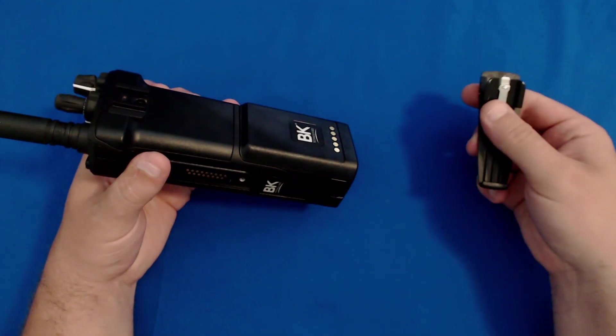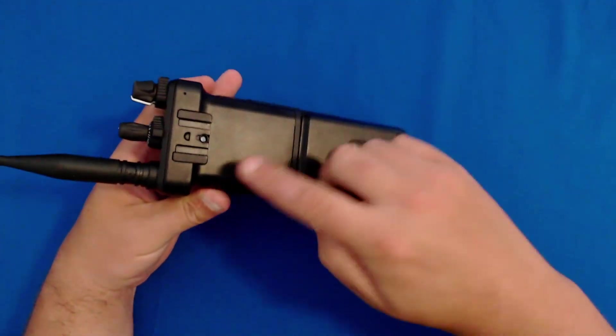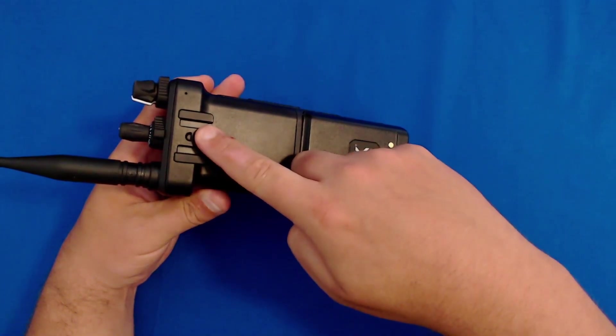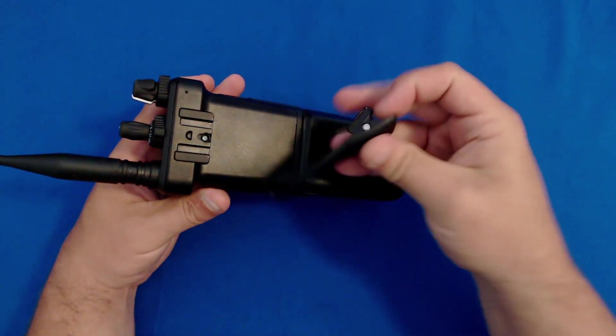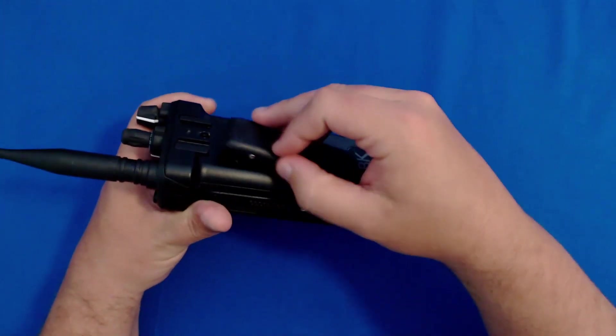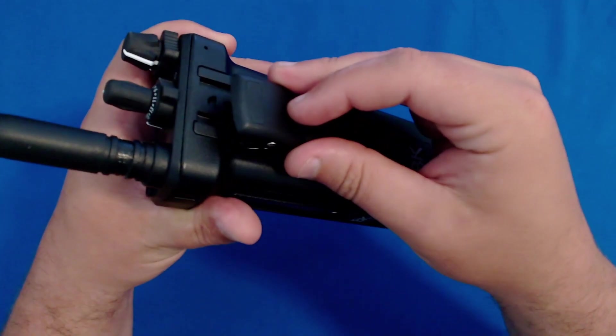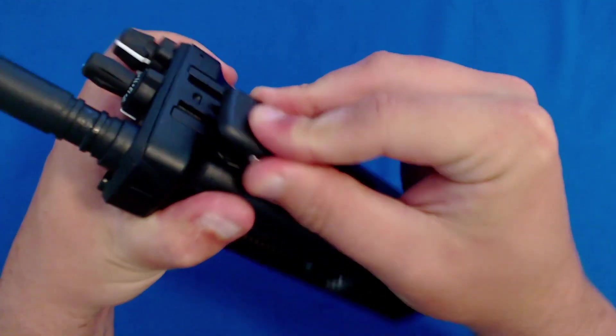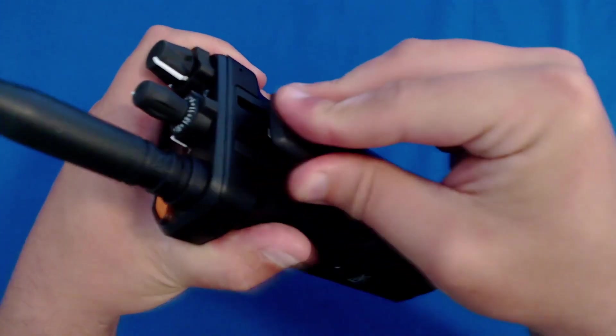Once we have our battery and antenna connected, we can then connect our belt clip. You'll notice on the back of the radio at the top there are two slots for the belt clip to slide into. We have two tabs on the belt clip, so match the tab on the belt clip with the tab on the radio.